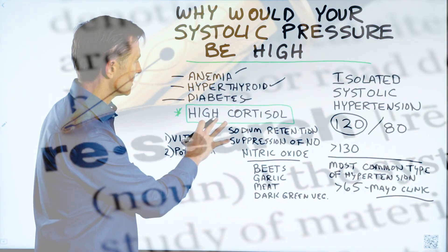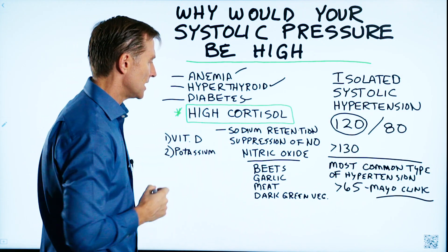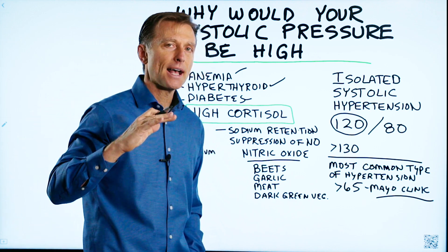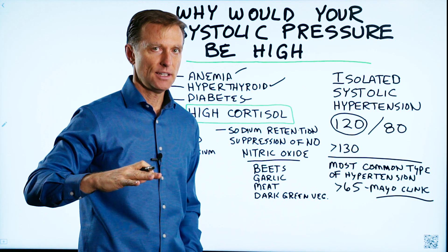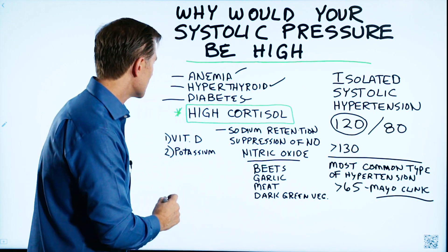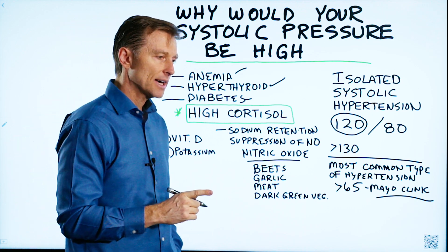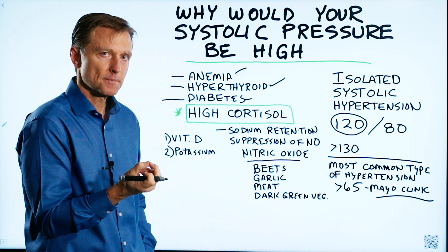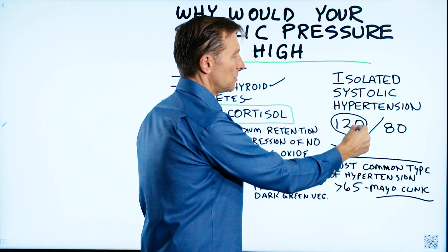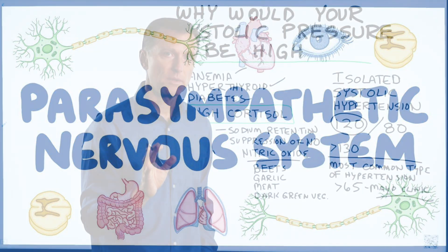So what's up with high cortisol? First of all, it causes significant sodium retention and also significant potassium suppression. Anytime you suppress potassium, you can start getting high blood pressure from that alone. It can also affect the sympathetic nervous system, which is part of the nervous system that controls this — sympathetic versus parasympathetic. That's another potential relationship there.